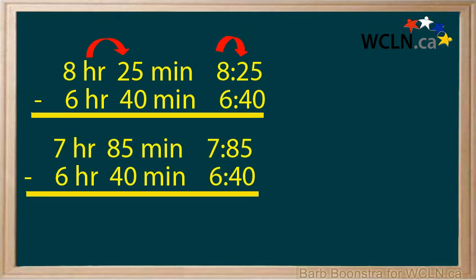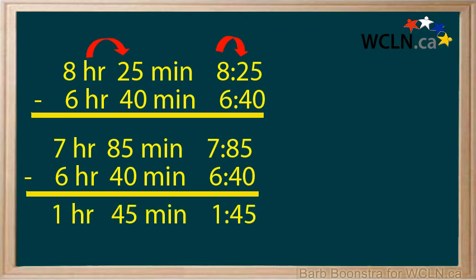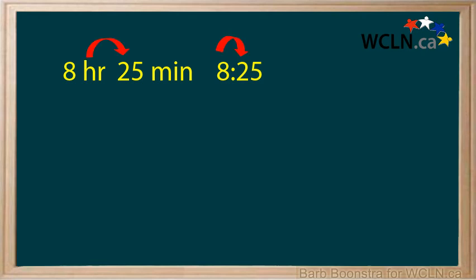If you borrow an hour from 8, this will give you 7 hours and 60 plus 25 minutes. Now you are subtracting 6 hours and 40 minutes from 7 hours and 85 minutes. This will give you 1 hour and 45 minutes. To review: borrowing is required when the top minutes are smaller. Remember that 1 hour is 60 minutes, so you will have 1 hour less but 60 minutes more.